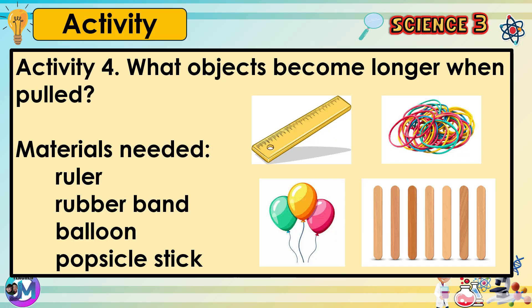Activity 4: What objects become longer when pulled? Materials needed: ruler, rubber band, balloon, popsicle stick.